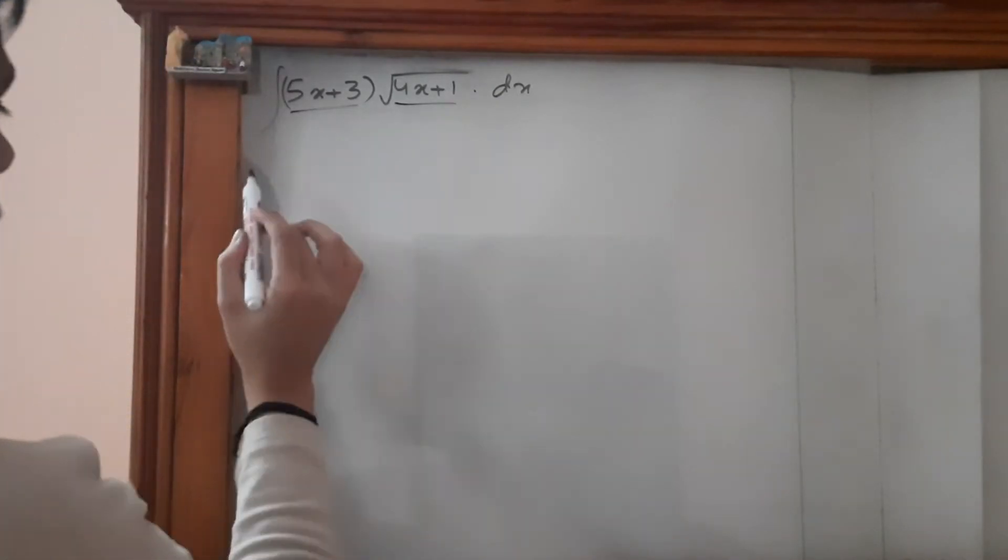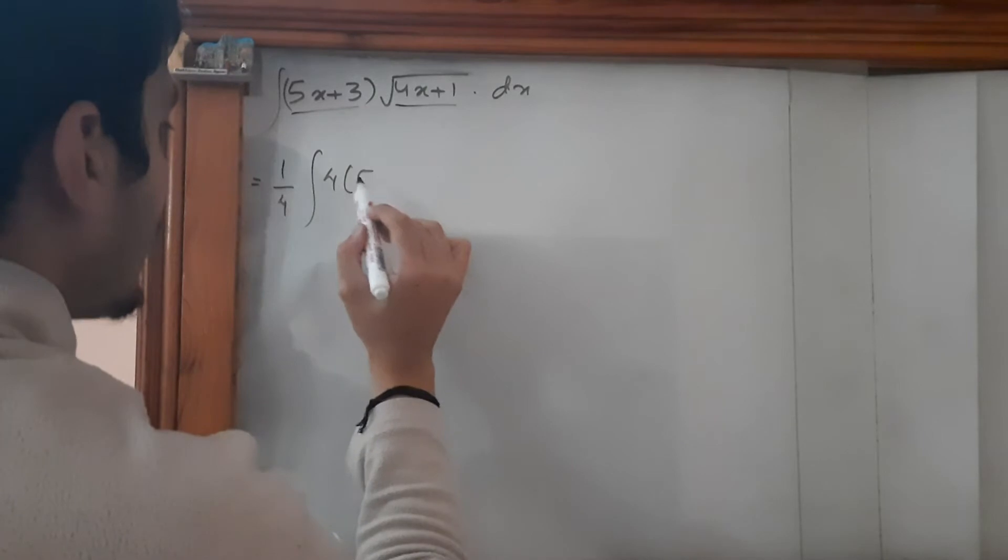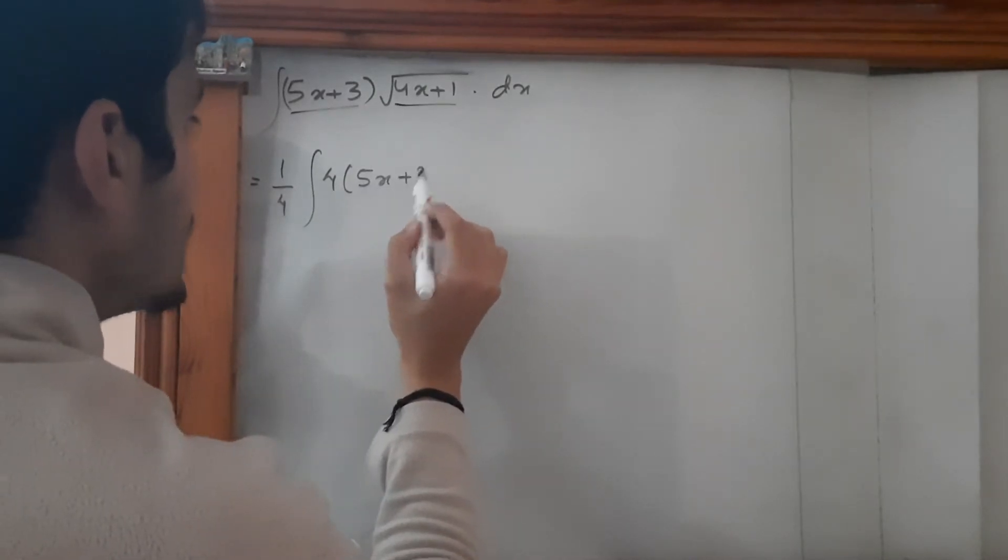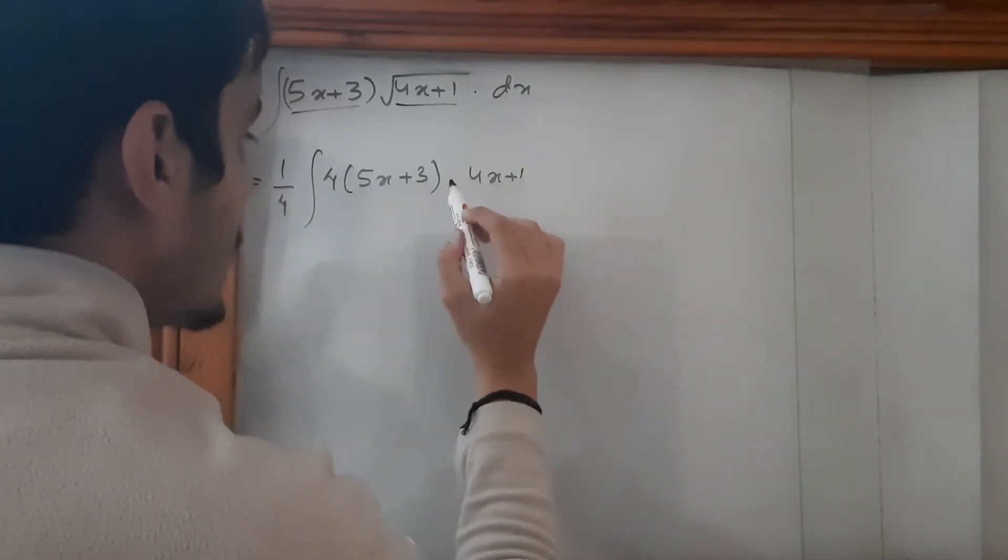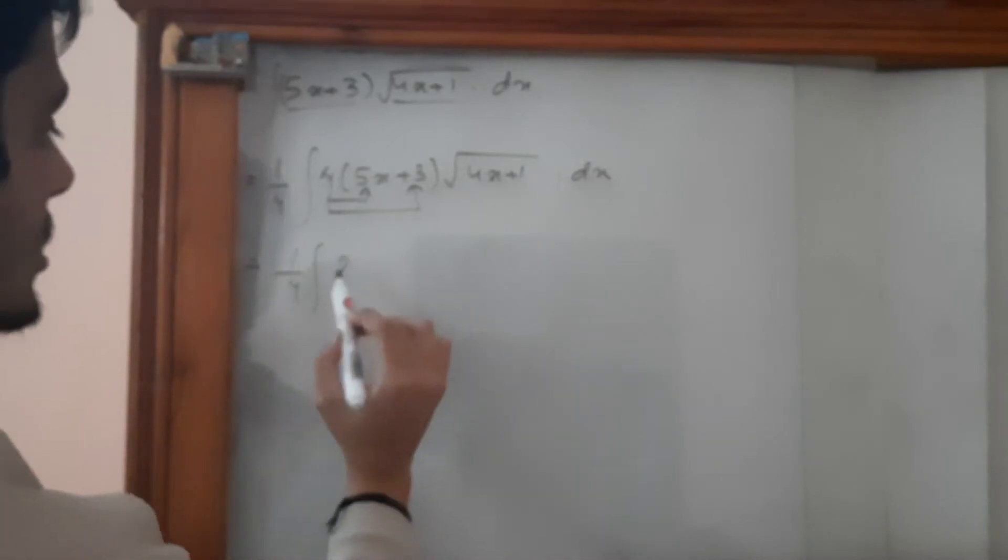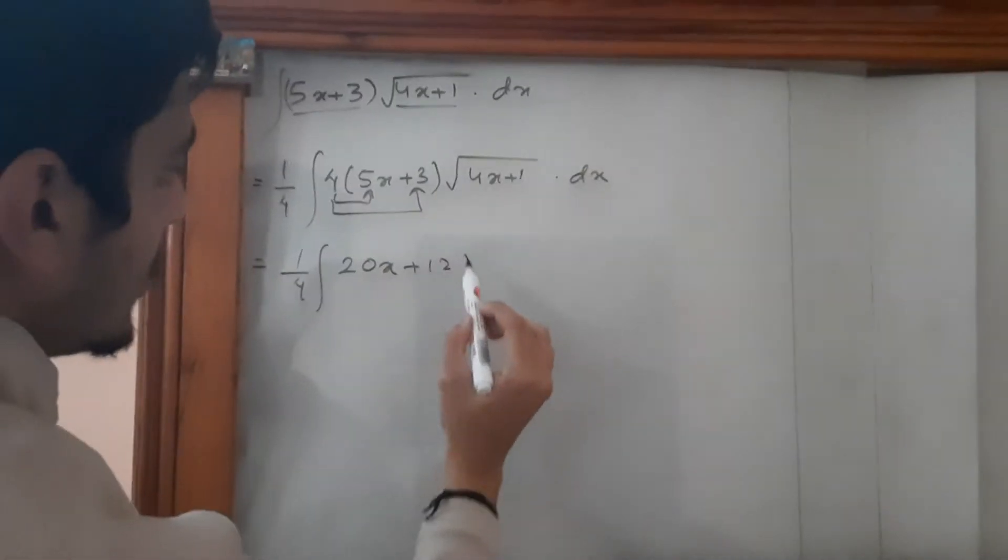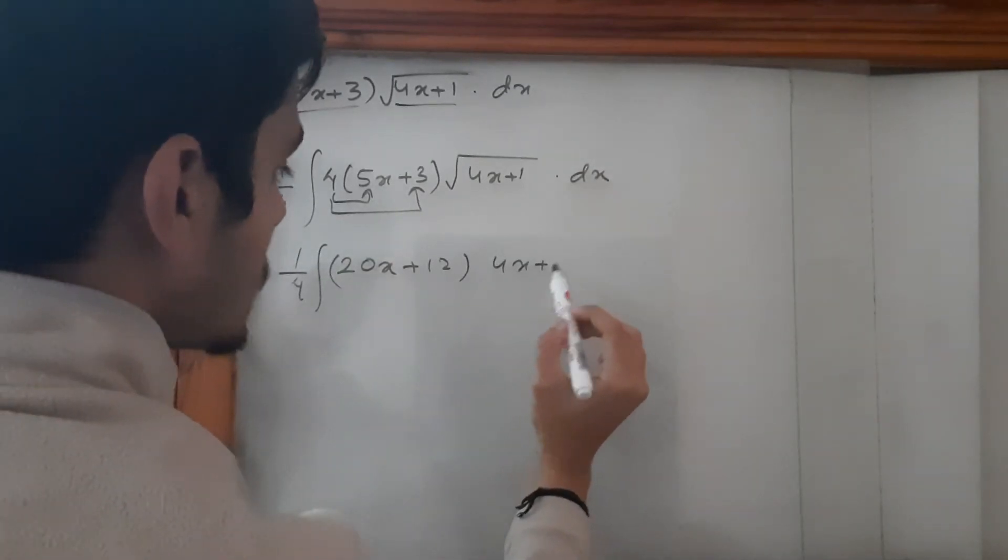What we can do is multiply and divide by 4. So it's going to be 1/4 times 4(5x + 3) times the square root of (4x + 1) dx. Let's multiply this with this. So it is 1/4, the integration sign is 20x + 12, times the square root of (4x + 1).